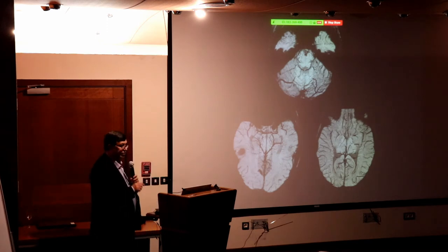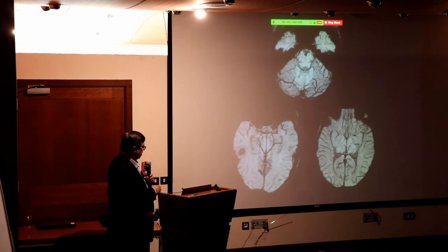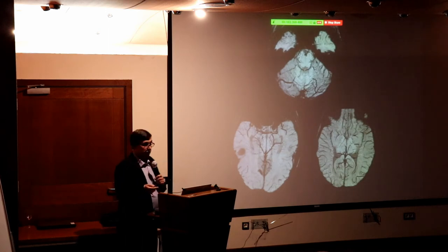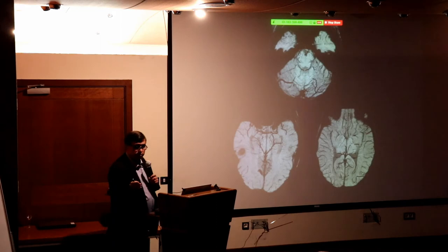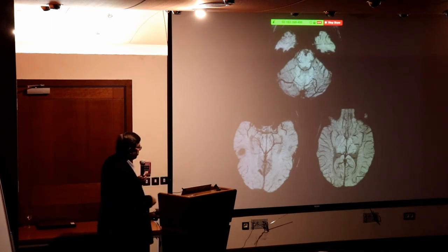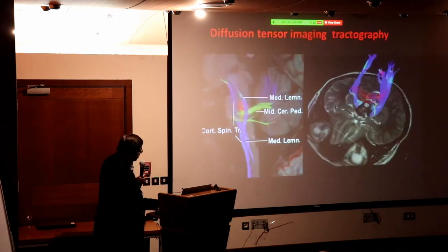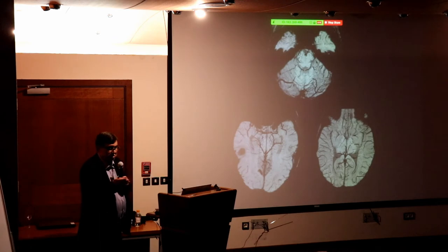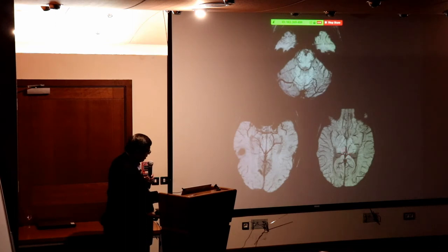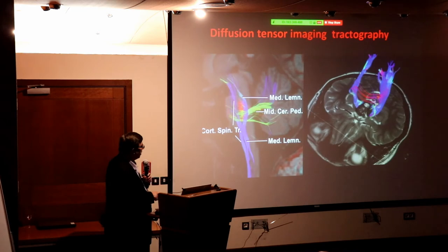Very few people know this area well — residents sitting for exams would not answer questions on the venous anatomy of the brain stem because their teachers don't know it. The venous system is as important as the arterial system. Here you can see the vein of Rosenthal and the central cerebral veins. I was actually complained against for asking about the carotid artery in an exam.